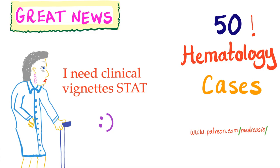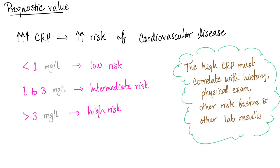Does CRP have a prognostic value? Yes. Increased CRP level is correlated with increased risk of cardiovascular disease. Less than 1 mg/L: low risk. 1 to 3: intermediate risk. More than 3: high risk of cardiovascular disease. But the high CRP must correlate with history, including family history, physical exam, other cardiovascular risk factors, and other lab results. They have to fit the narrative — don't lose your mind because you heard something on YouTube. Talk to your doctor.